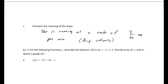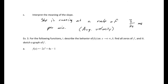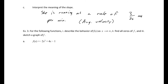Example 3: for the following functions, describe the behavior as x goes to plus or minus infinity, find all zeros, and sketch the graph. The behavior at infinity depends on two things: the highest exponent (the degree) and the leading coefficient. The degree of part (a) is 2 — it's a quadratic.